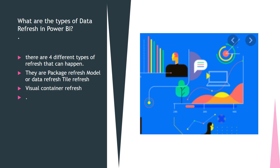What are the types of data refresh in PowerBI? There are four different types of refresh that can happen: Package Refresh, Model or Data Refresh, Tile Refresh, and Visual Container Refresh.